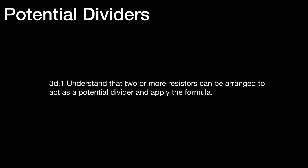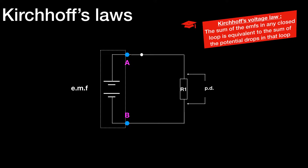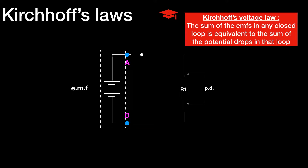First of all, let's go back to a topic we looked at in a previous video and revisit Kirchhoff's Voltage Law. Kirchhoff's Voltage Law says that the sum of the EMFs in any closed loop is equivalent to the sum of the potential drops in that loop. Although it wasn't explicitly mentioned in the syllabus, it's very useful to know because the implications of it come up time and again.